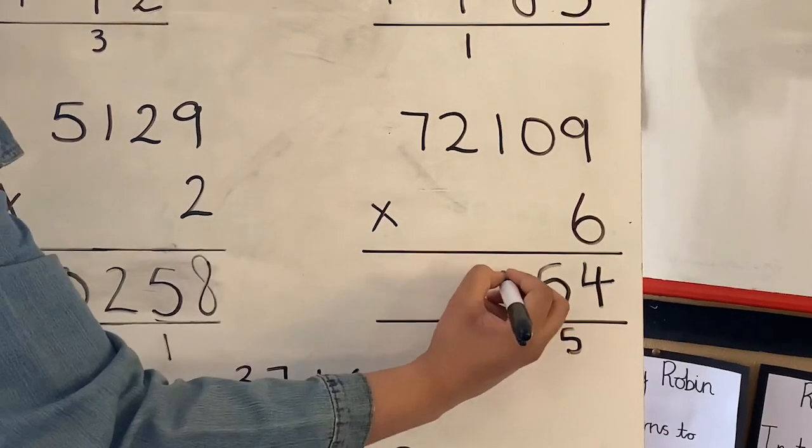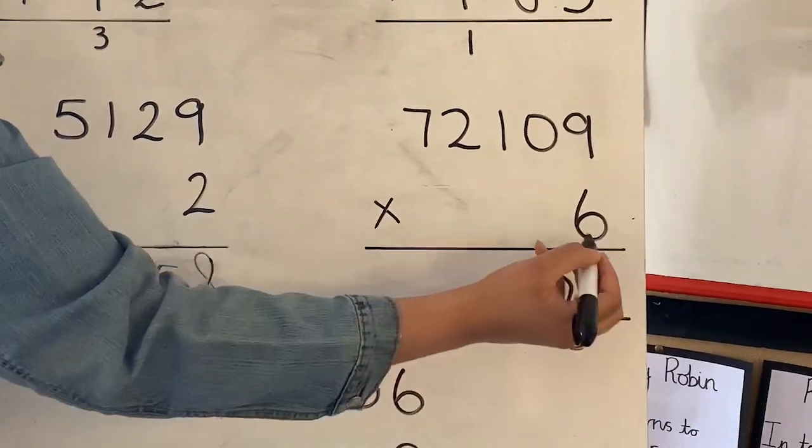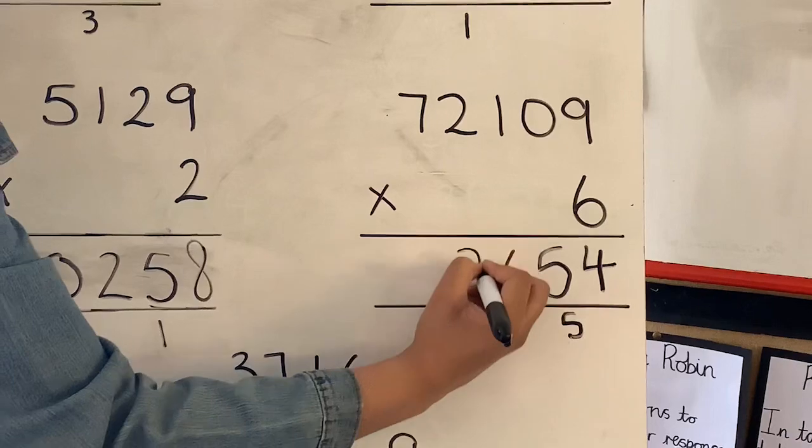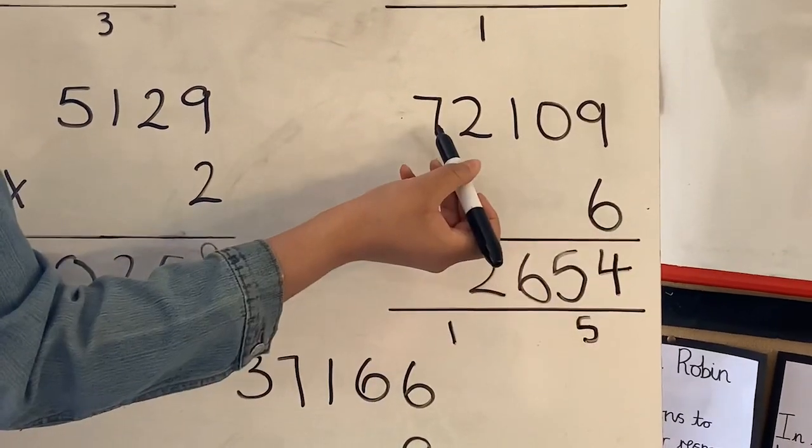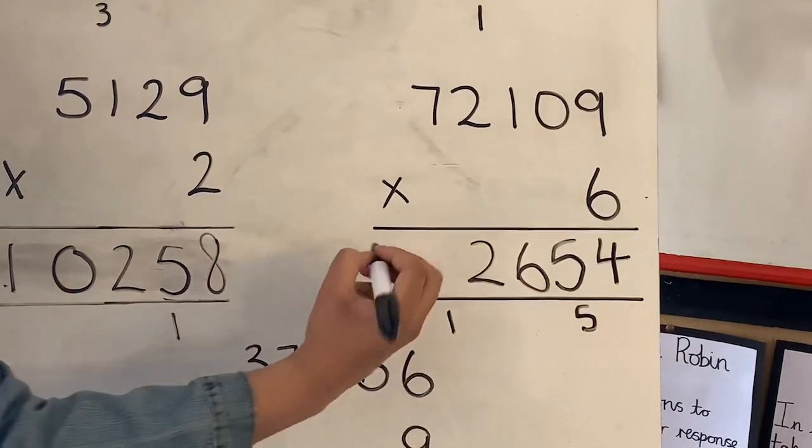6 times 1 which is 6. 6 times 2 is 12, put the 2, carry the 1 over to the next column. 6 times 7 which is 42, add the 1 which is 43. And the answer is 432,654.